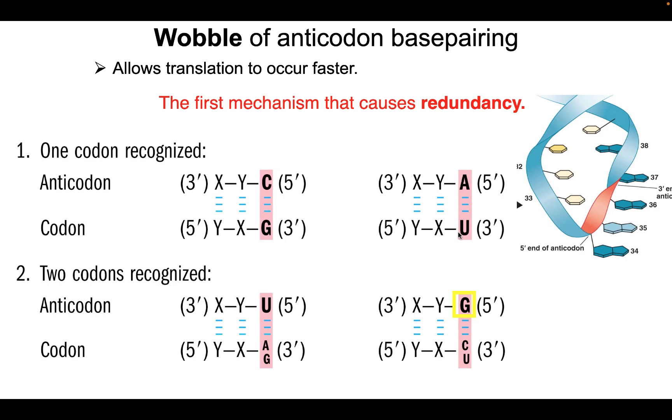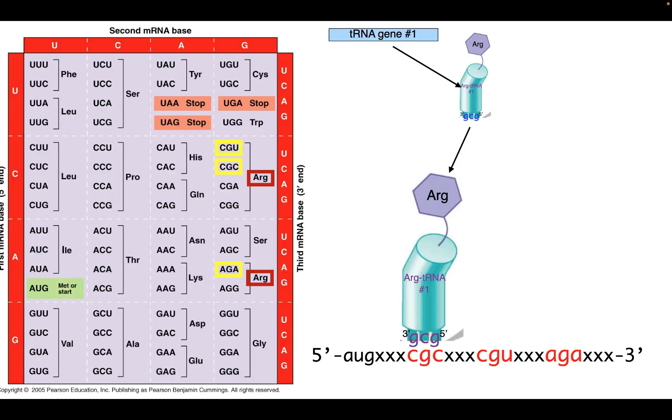So let's see then how that changes our situation here. Here again is our tRNA number one bound to arginine with a GCG anticodon, and it, of course, binds a CGC codon. But now that we understand the wobble effect, we know that this exact same tRNA will not only bind to every CGC, but it will bind every CGU as well. Therefore, we have just defined one of the molecular mechanisms by which two different codons, CGC and CGU, will encode the same amino acid, arginine.